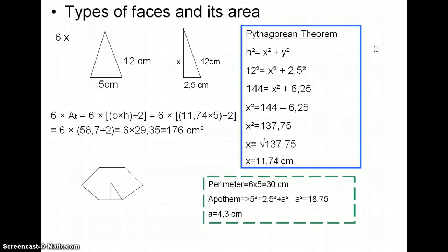So we swap the x with the 144 and we have x squared equals 144 minus 6.25. So to discover the x we must calculate the square root of 137.75. So the height is equal to 11.74 centimeters.